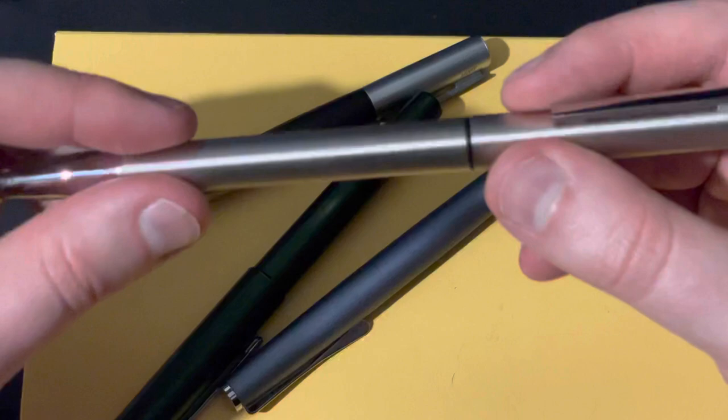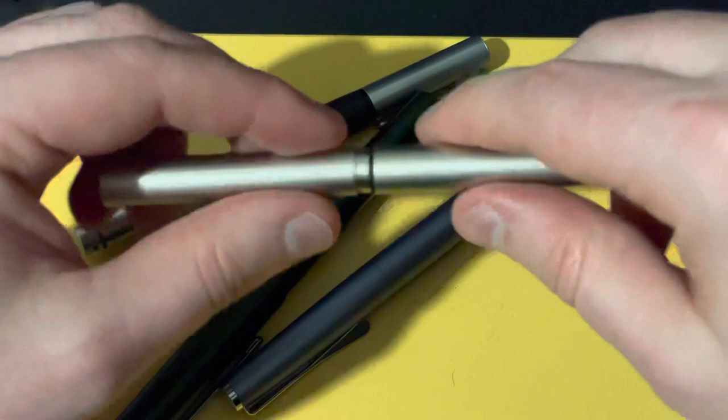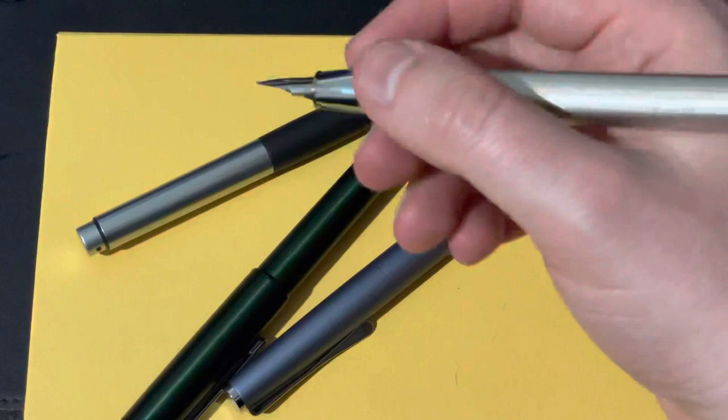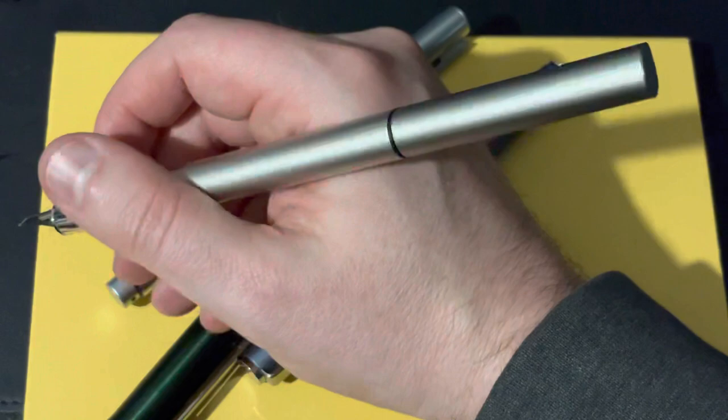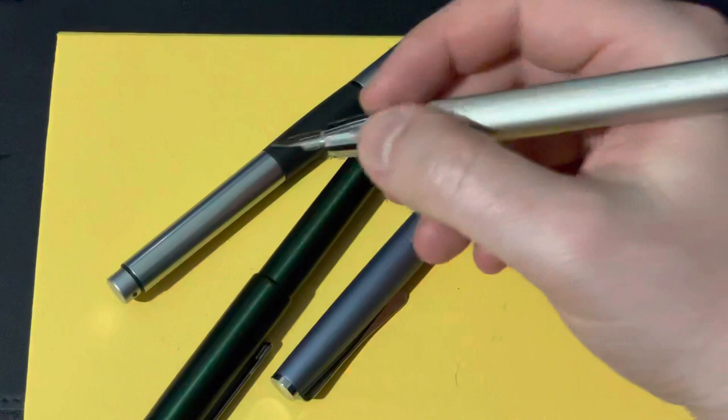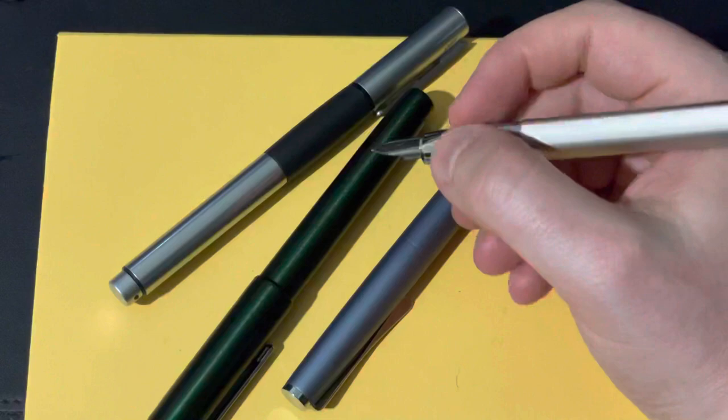And then once it's posted the cap is very light. It's a very thin metal around the inside there. So I think you could write with this posted very comfortably. It doesn't feel too back heavy. It looks a little weird like it's really long if you hold it in any realistic way. But if you have nowhere to put your cap I think that's as good a place as any and it won't hinder the writing experience.